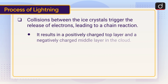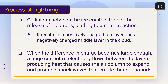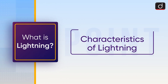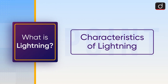This results in a positively charged top layer and a negatively charged middle layer in the cloud. When the difference in charge becomes large enough, a huge current of electricity flows between the layers, producing heat that causes the air column to expand and produce shock waves that create thunder sounds. Now moving on to characteristics of lightning.